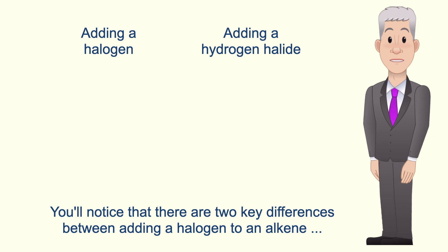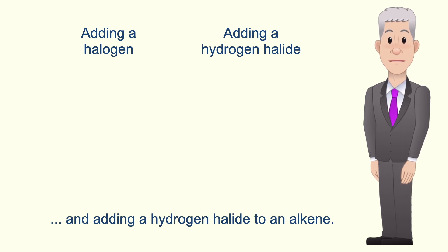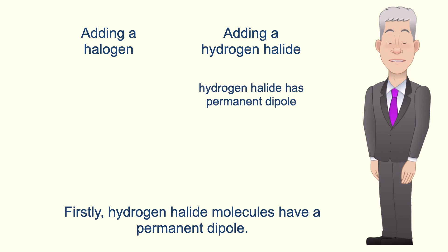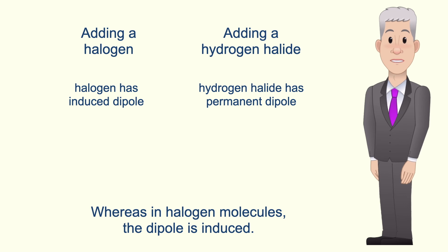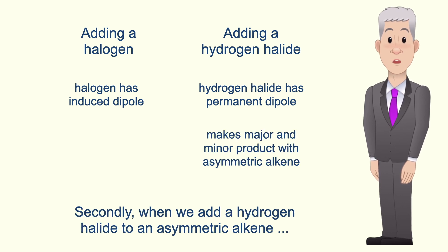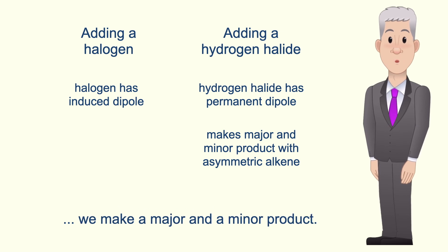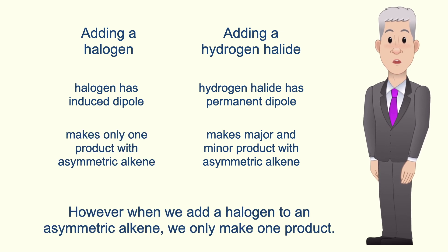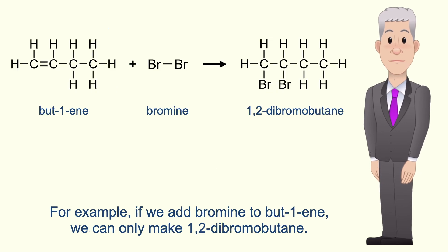There are two key differences between adding a halogen to an alkene and adding a hydrogen halide to an alkene. Firstly, hydrogen halide molecules have a permanent dipole whereas in halogen molecules the dipole is induced. Secondly, when we add a hydrogen halide to an asymmetric alkene we make a major and a minor product; however, when we add a halogen to an asymmetric alkene we only make one product. For example, if we add bromine to but-1-ene we can only make 1,2-dibromobutane.